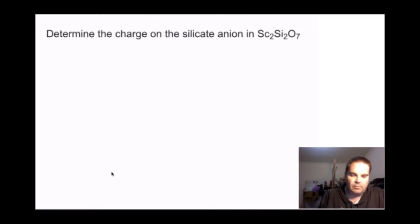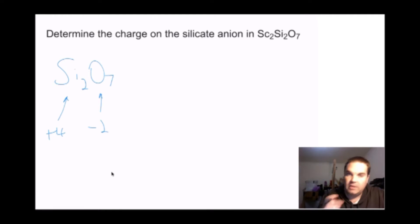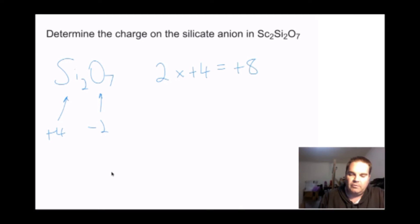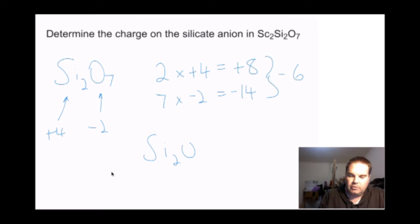We're looking at Si2O7. The silicons are plus 4 and the oxygens are minus 2. So 2 silicons at plus 4 equals plus 8 overall. 7 oxygens at minus 2 equals minus 14. 8 minus 14 is minus 6. So Si2O7 has a 6-minus charge.